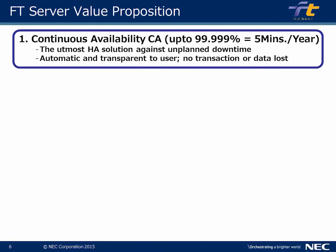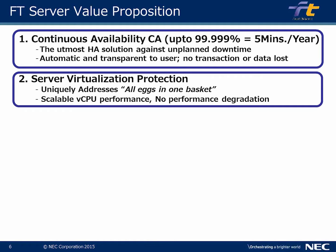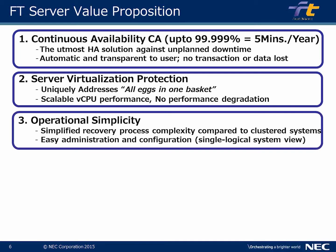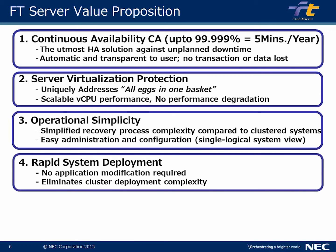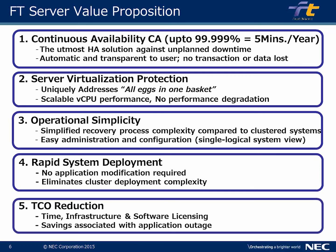The value proposition includes: continuous availability with five nines of high availability — five minutes per year of downtime. Server virtualization protection is critical because virtualization has changed computing — the more VMs on one system, if that system goes down, you lose all virtual machines, and the NEC FT protects against that. Scalable vCPU performance with no degradation even during failure. Operational simplicity: easy to roll out, administer, and configure. Rapid deployment — three minutes versus almost 30 minutes with other solutions, no cluster complexity, and TCO reduction in infrastructure, software licensing, and application outage savings.